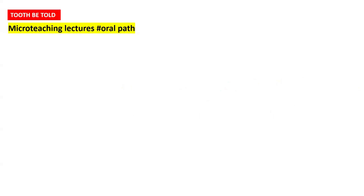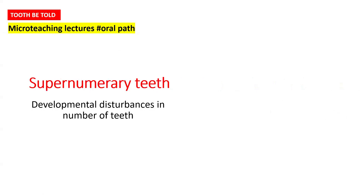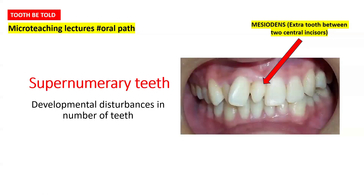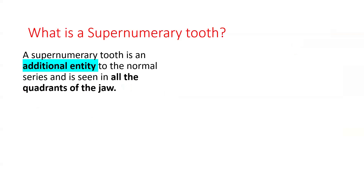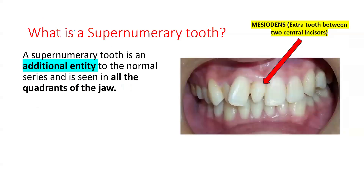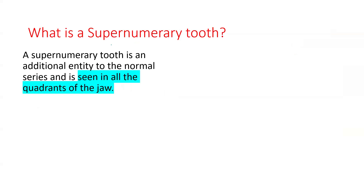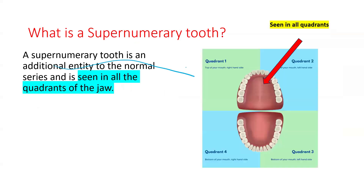Welcome to Tooth B, Toll's micro teaching lectures on oral pathology. Today's topic is the supernumerary teeth, or the extra teeth. A supernumerary tooth is an additional entity to the normal series, which is seen in all quadrants of the jaw. As you can see here, there is an extra tooth located between the maxillary central incisors. It can be present in all quadrants of the jaw.